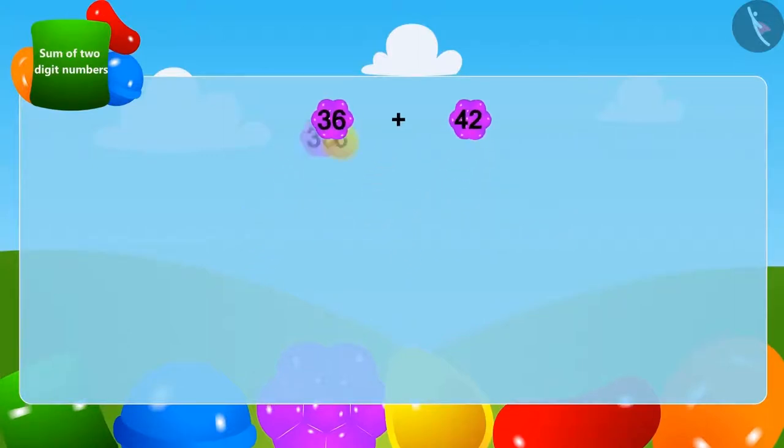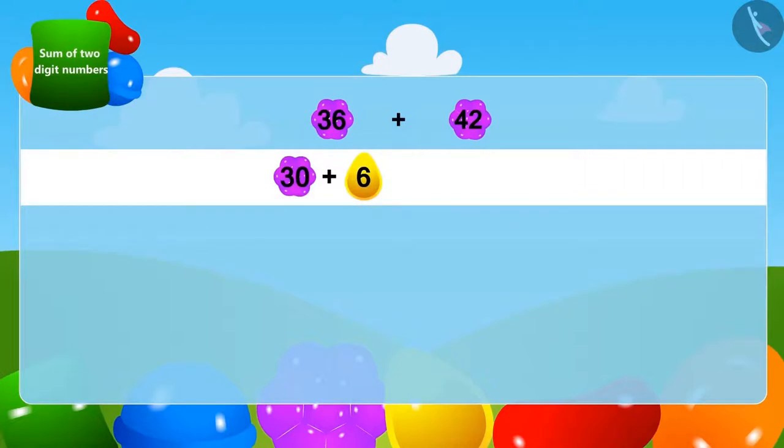We can write 36 by adding 6 to 30. And in the same way, we can write 42 by adding 2 to 40.